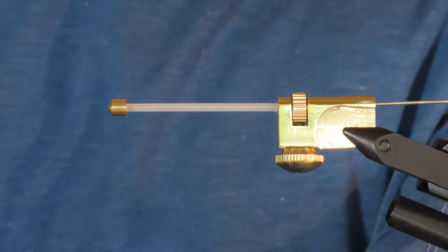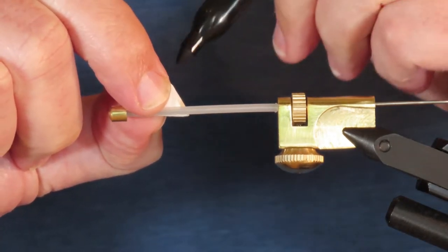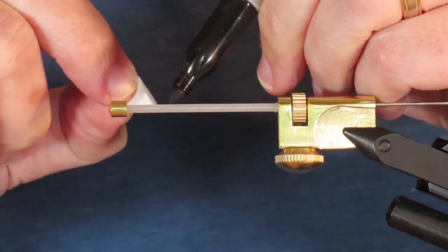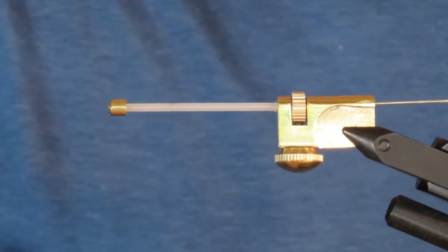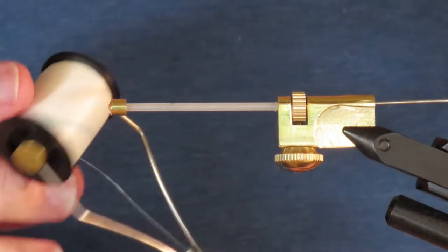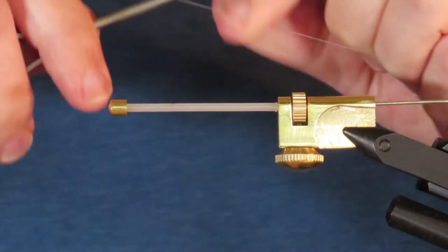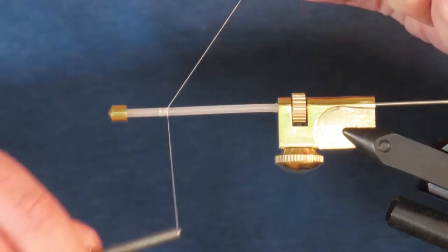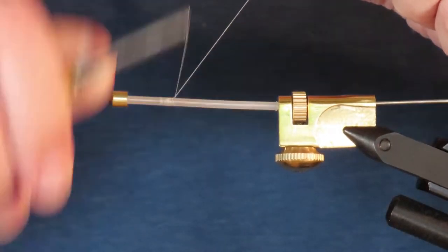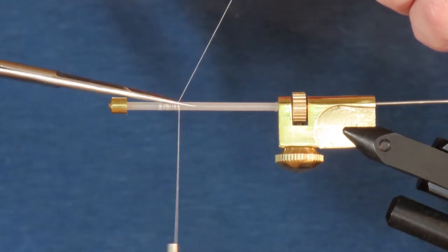Before attaching my thread, I'm going to take my popper head and mark on the tube approximately how far it extends back. I'll know that I can put thread wraps beyond that point, but I'll want to keep all the materials themselves behind it. I'm using a 6-aught Unithread in white. I'll make a short thread base, say about a quarter of an inch in front of the point I just marked, and cut away the excess.